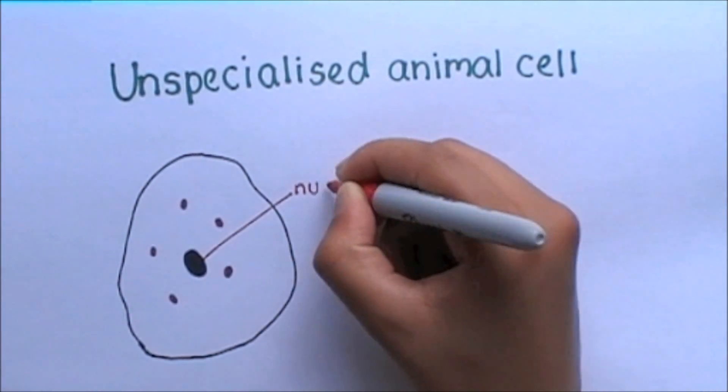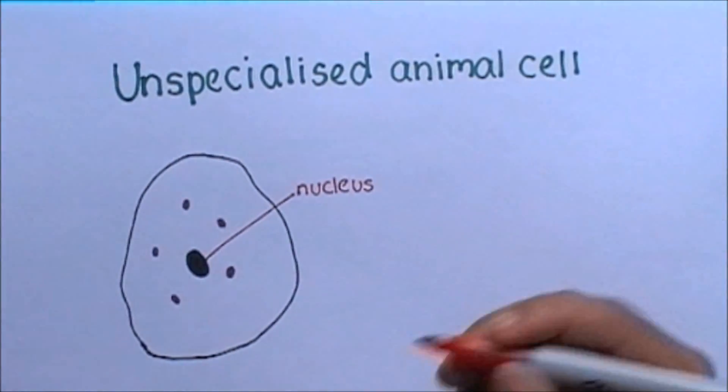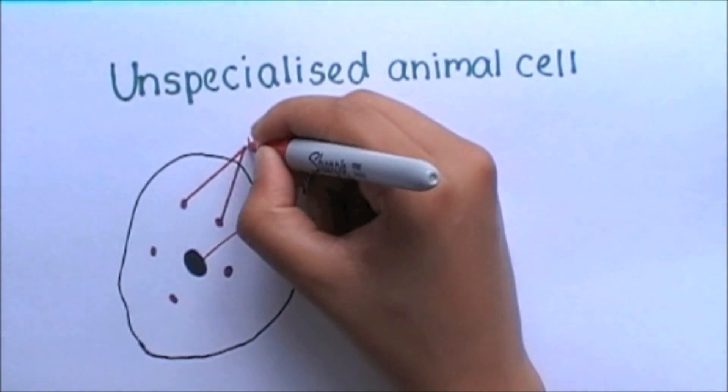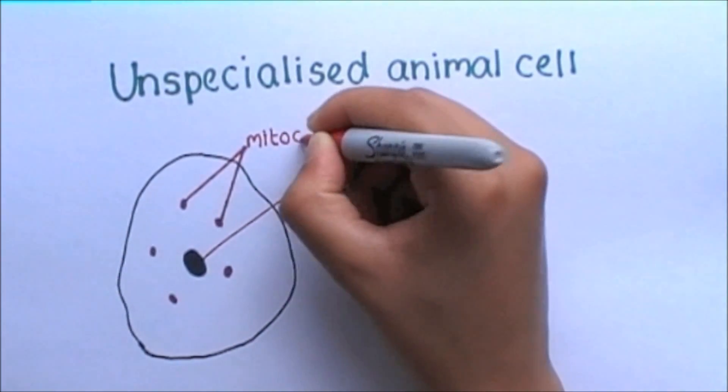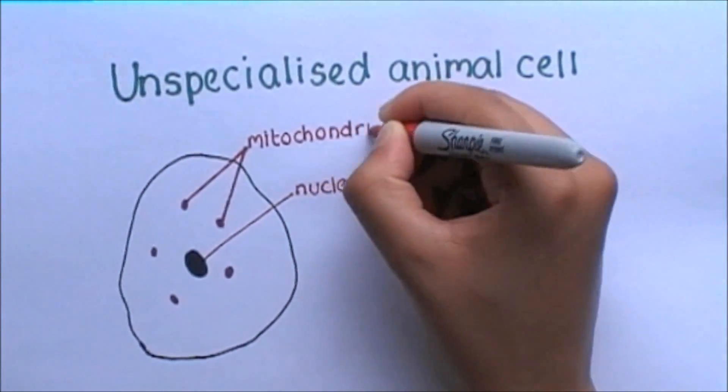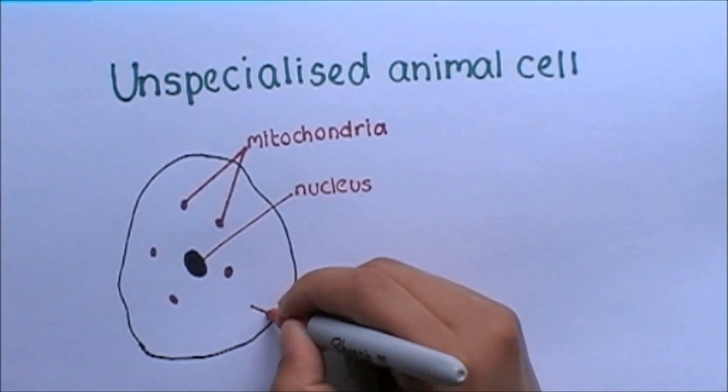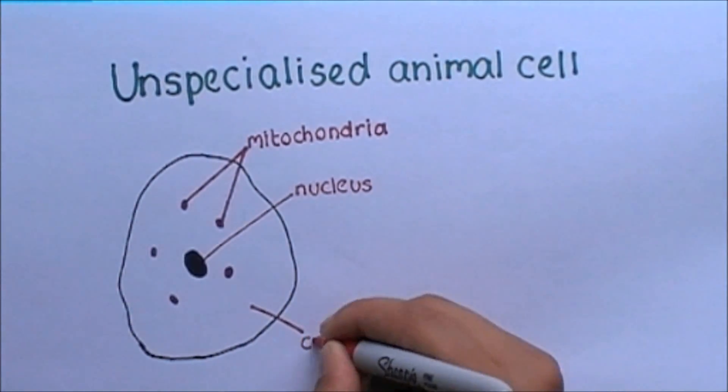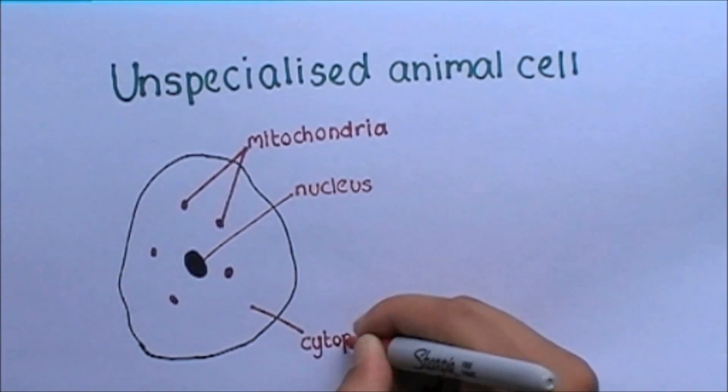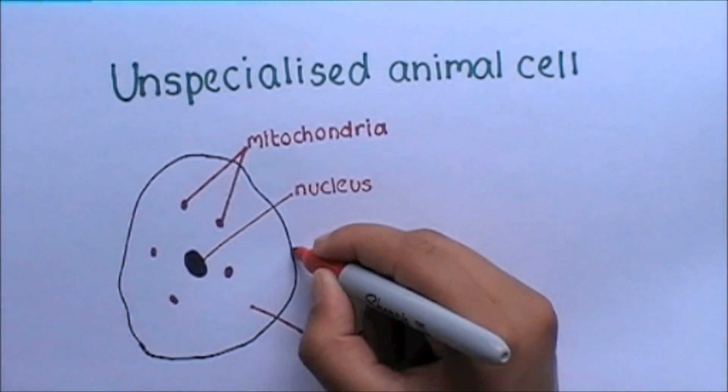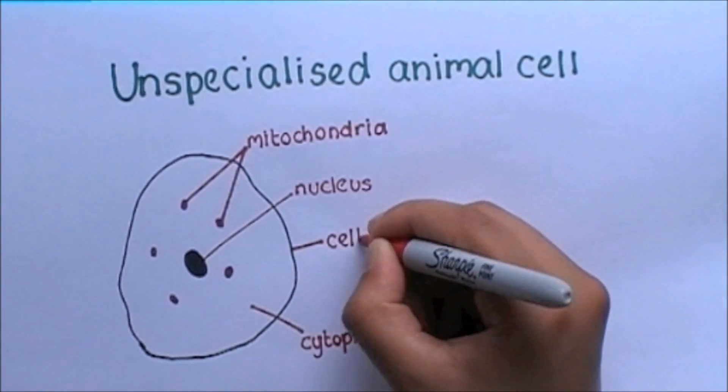The black blob-like structure in this diagram is the nucleus. The several other dots shown are called mitochondria. Note this is the plural of the word, with the singular being one mitochondrion. The area surrounding these structures is filled with a substance called cytoplasm, and the outside line of this cell is called the cell membrane.